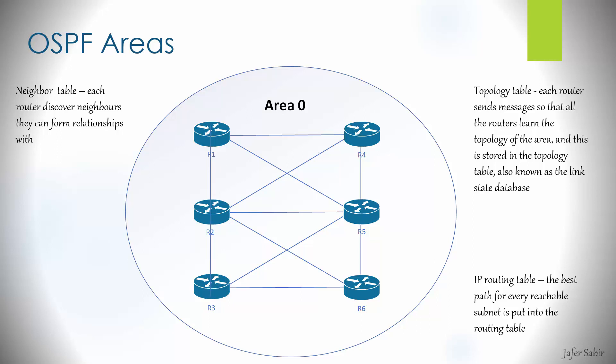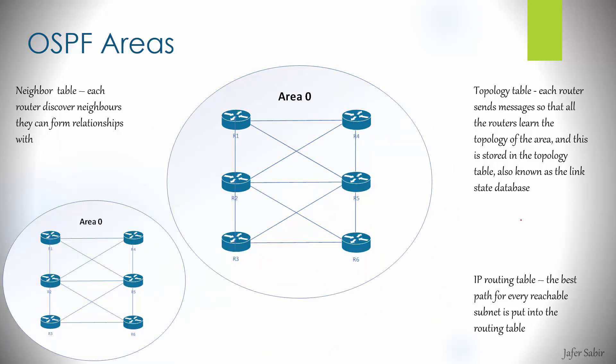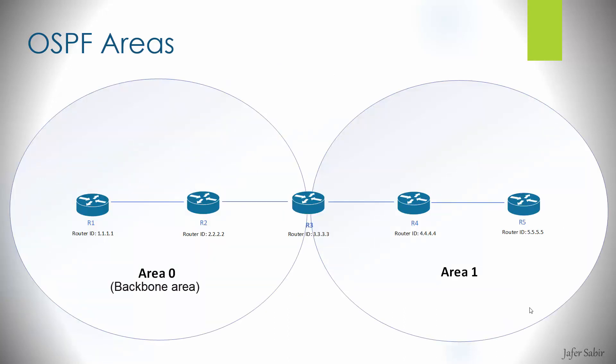This is why having more than one area is needed — splitting routers into multiple areas. The benefit is that flooding of advertisements and the topology databases are limited within each area; areas act as boundaries on the link state updates being exchanged. For example, if new routers are added in their own area, the topology databases of routers in the existing area are not impacted. The new routers build their own databases within the new area without affecting the current area.